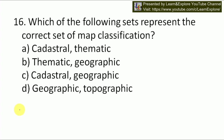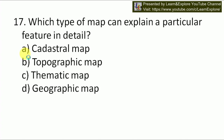Next question: which of the following sets represents the correct set of map classification? Options are A — cadastral and thematic, B — thematic and geographic, C — cadastral and geographic, D — geographic and topographic. Maps are classified into three categories: cadastral map, topographic sheets, and thematic map. So our answer will be A — cadastral and thematic. The third one is topographic sheets.